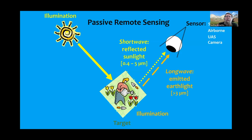When looking at shortwave or longwave radiation, we're dealing with passive sensing: a source of illumination illuminates the target, and a sensor views it — either reflected sunlight or emitted longer-wave earth light. That sensor may be on a satellite, an airborne platform, a drone, or even a fixed camera. The closer to the surface, the less atmosphere is a problem. We can't see through clouds in the shortwave or longwave, but if we go out to the microwaves, we can see through clouds.